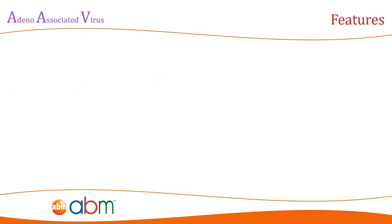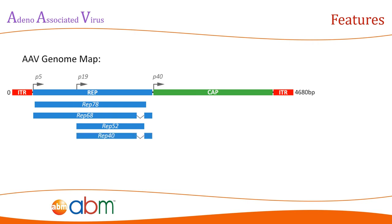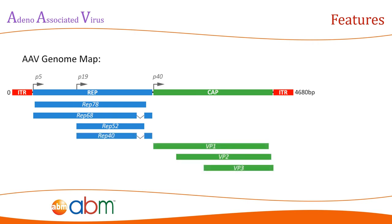Adeno-associated virus possesses a variety of features that make it a truly remarkable gene delivery system. AAV has a linear single-strand DNA genome of approximately 4.7 kilobases in length with two 145-nucleotide-long inverted terminal repeats. The AAV genome does not encode a polymerase and instead relies on cellular polymerases for its replication. Its entire genome only encodes viral replication and capsid genes, which encode all non-structural and structural proteins for replication regulation and capsid structure respectively.